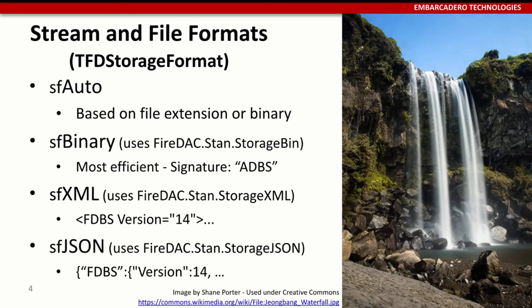When it comes to persisting data, there are three different formats, defined by the TFDStorageFormat enumeration. The first value is Auto, which is based on the file extension — if it's .xml, it'll be an XML file. If the extension is not recognized or not specified, or if you're streaming (since streams don't have file names), it defaults to binary. Binary is the most efficient format — the thin stream, as shown in the picture. If you save the same dataset to disk three times, the binary file would be smallest.